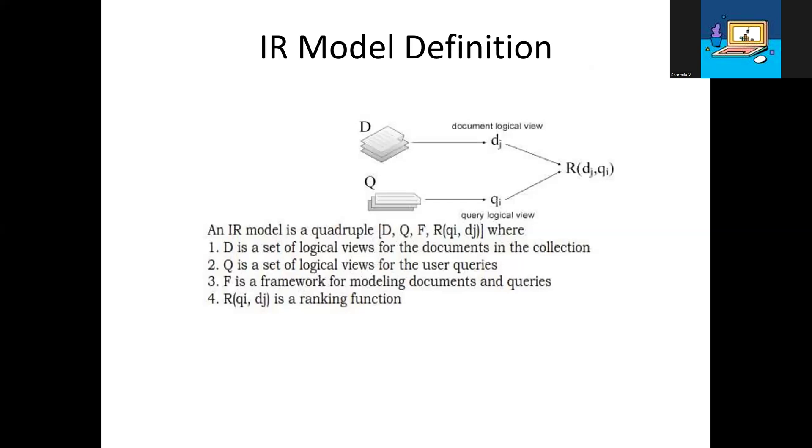Q is a set of logical views of the user queries - what the user enters in the web search engine. F is a framework for modeling documents and queries together. R is a ranking function that determines which documents are relevant to the query. Each document receives a rank. These are the four tuples of the IR model.